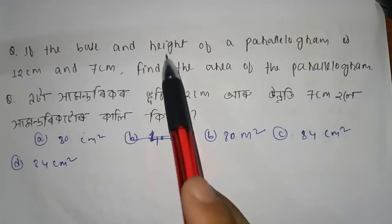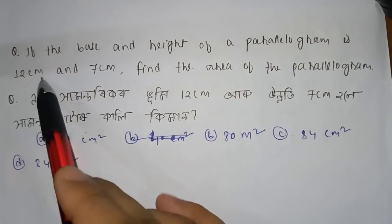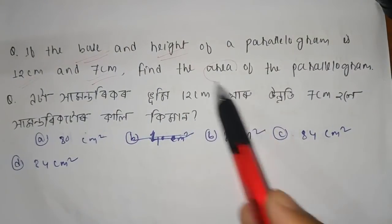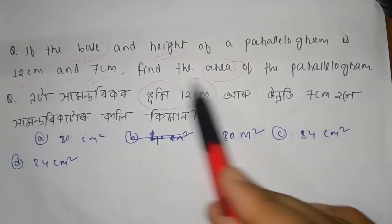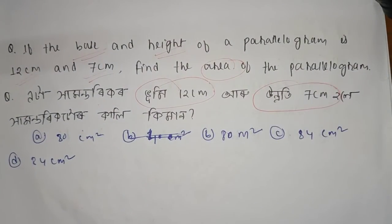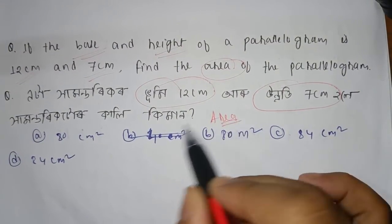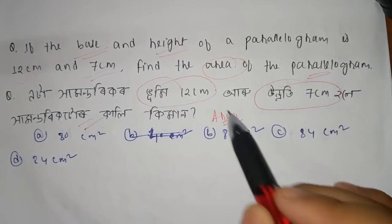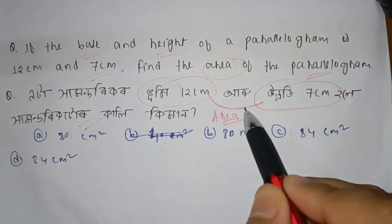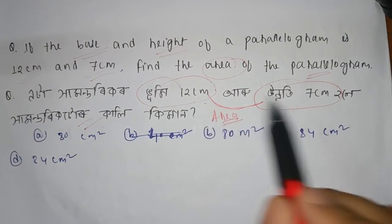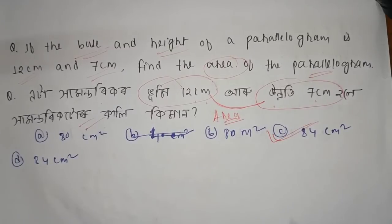If the base and height of a parallelogram is 12 cm and 7 cm, find the area. Base into height — 12 into 7 — is equal to 84 cm squared. This is clear.